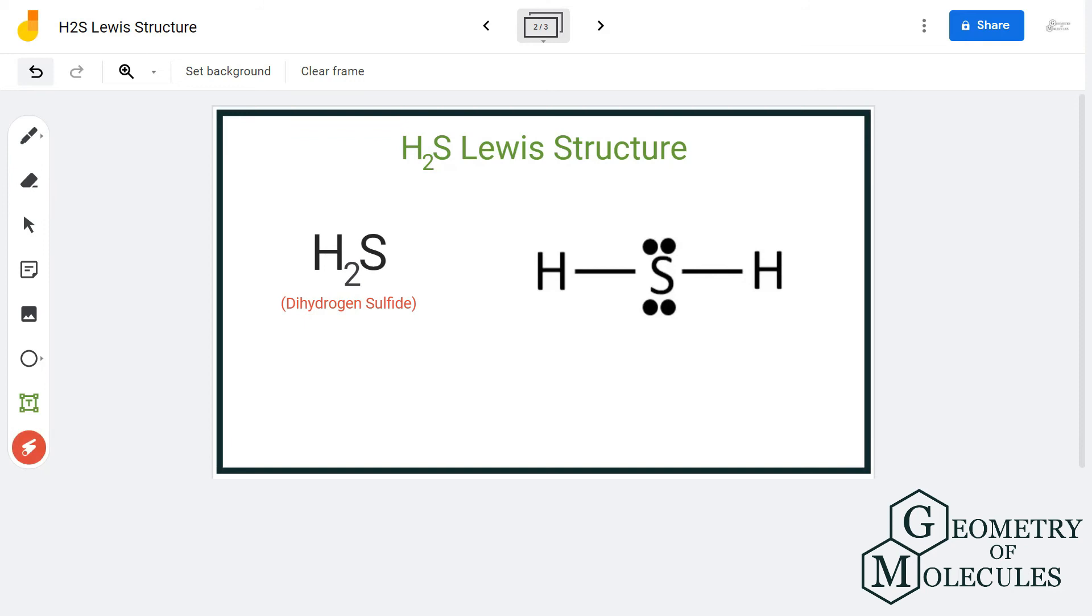After doing that, let's check if the octets of all the atoms are complete. Here hydrogen needs two valence electrons in its outer shell to attain a stable structure. So both the hydrogens have two and sulfur has eight. But these two electrons, or these two pairs of electrons, are non-bonding pair of electrons, or also known as lone pairs of electrons.